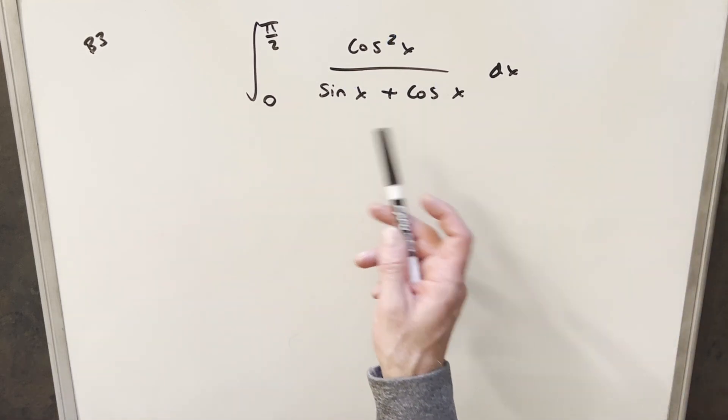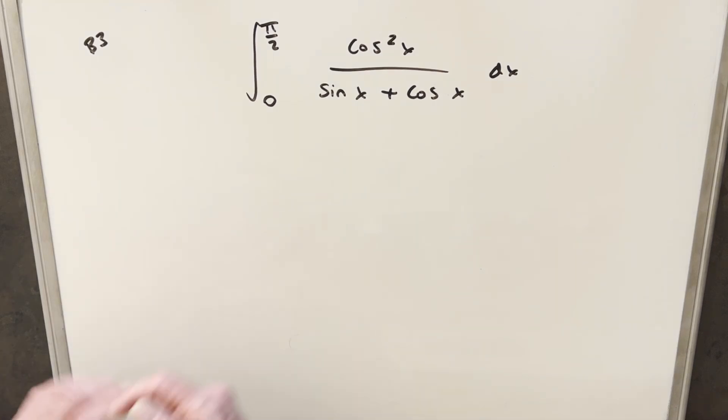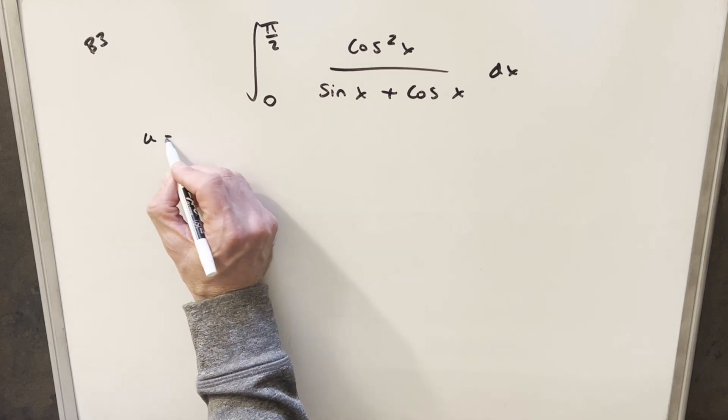But now, even though we don't have the same exponent on every term, I think we can still use the same technique. We can still use King's Principle on this, but we're going to do a u-substitution. So let's try this.